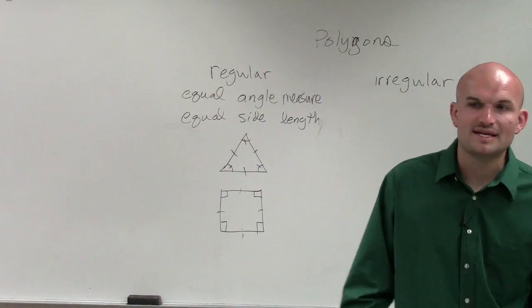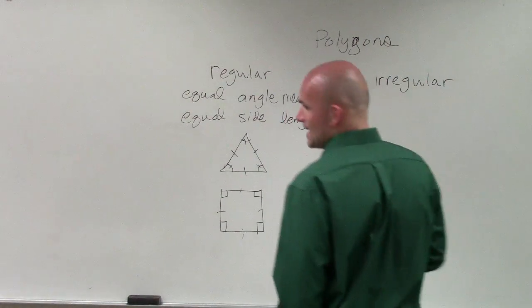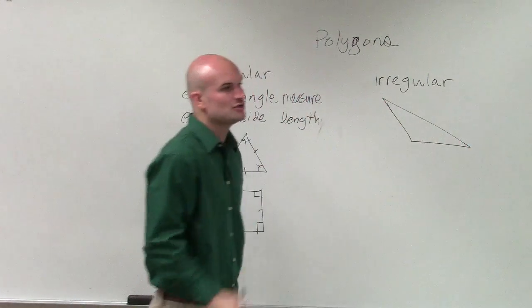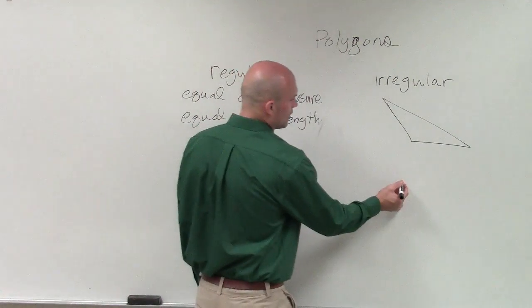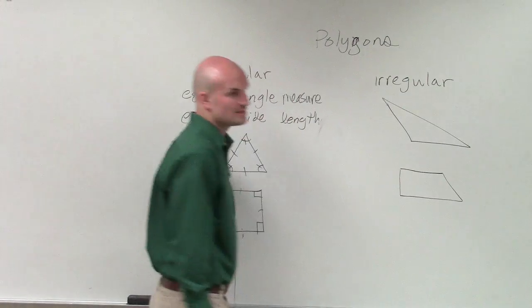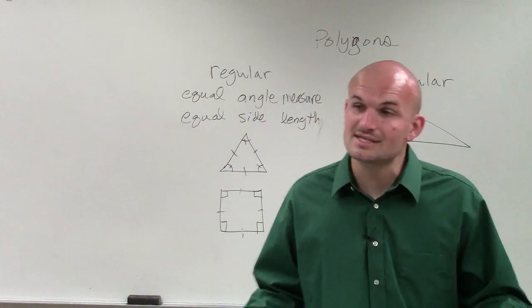So irregular just means that it's not going to have all the side lengths the same, nor is all the angles going to be the same. So if you want to do an irregular triangle, you could just do like an obtuse one. An irregular quadrilateral, make a nice little trapezoid or something like that. But it just means that not all the angles and sides are going to be the same.